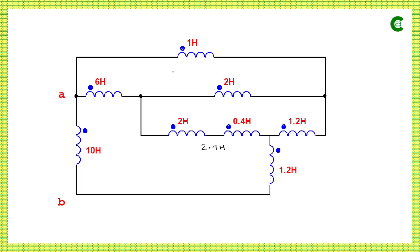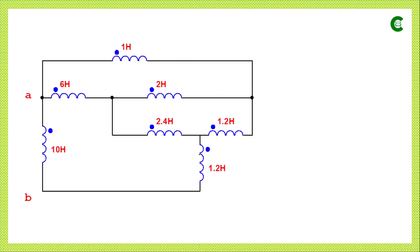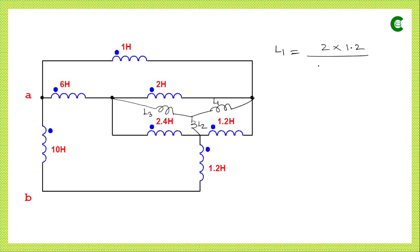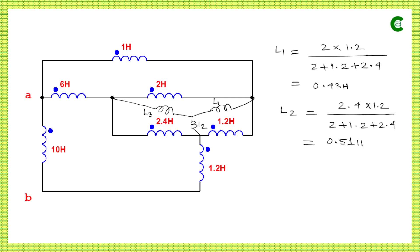We can see one star connection and one delta connection, and another delta connection and another star connection. We need to decide which conversion is more beneficial. In the modified circuit, the combined series inductor is 2.4 Henry. We will target this delta connection and convert it to its equivalent star connection. Using the same formula: L1 = (2 × 1.2) divided by (2 + 1.2 + 2.4) = 0.43 Henry. L2 = 0.51 Henry and L3 = 0.86 Henry.